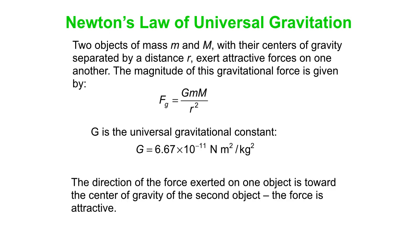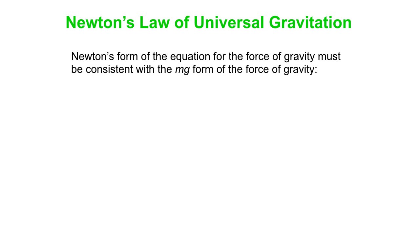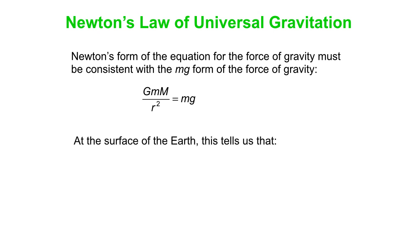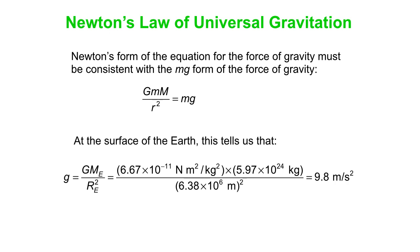The direction of the force is always back toward the object exerting that force, because gravitation is an attractive force. This new form of the equation must be consistent with the old mg form. If we set mg equal to GMm over r squared, the m's cancel out, and what you're left with is little g — which we sometimes call the acceleration due to gravity.